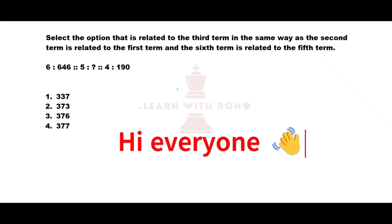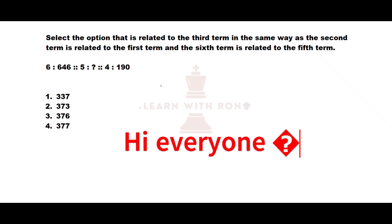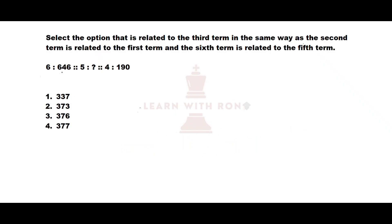Hi everyone. Let's do our first question. See what they have given here. 646 is related to 6, 190 is related to 4. We need to find a number from the given options which is related to 5.